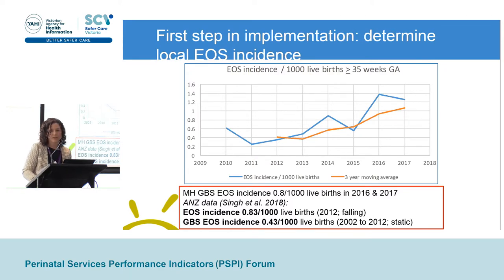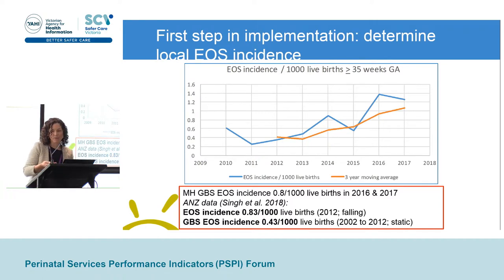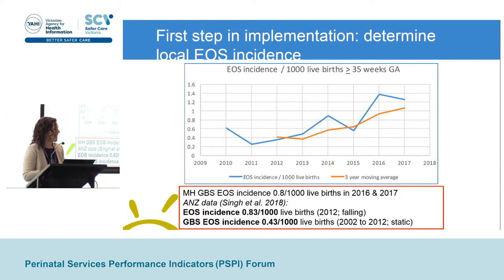The first step in implementation was to determine our local early onset sepsis incidence. This was my moment of data grief — when we delved into the data and discovered that our background incidence was higher than I had anticipated. King Edward Memorial Hospital quoted an incidence of 0.4 per thousand live births for babies born at 35 weeks and above, and the Royal Women's Hospital had quoted approximately 0.5. Our incidence, looking at the moving average over the last three years in babies born 35 weeks and above across Monash Health, is sitting at 1 per thousand live births, and the majority of this is accounted for by GBS.